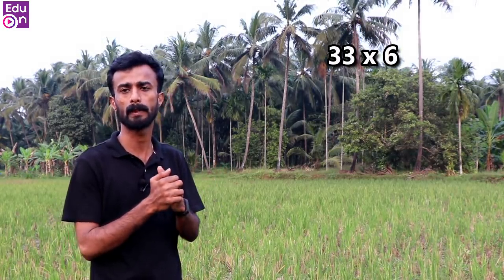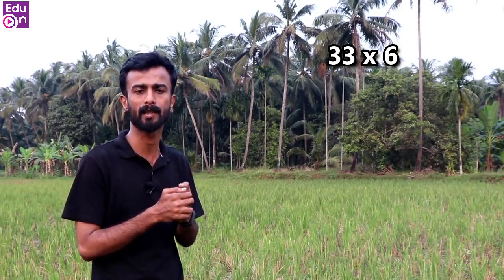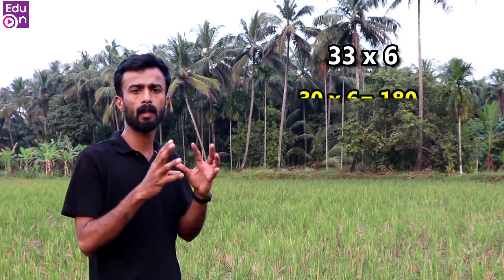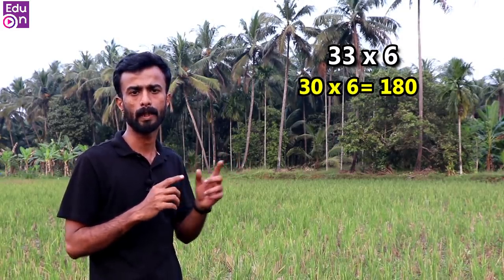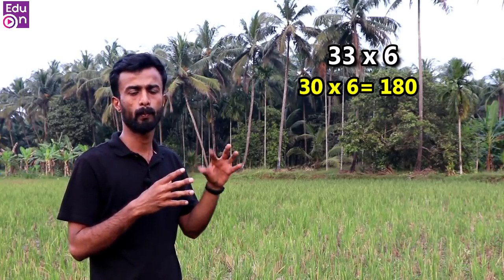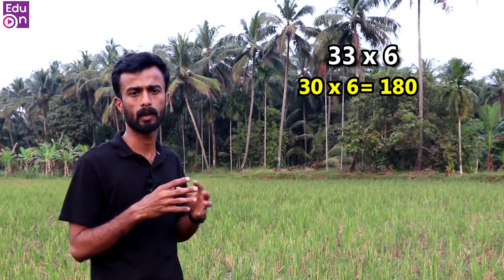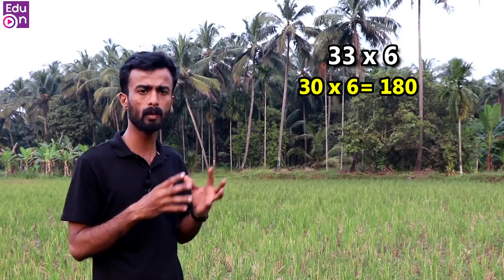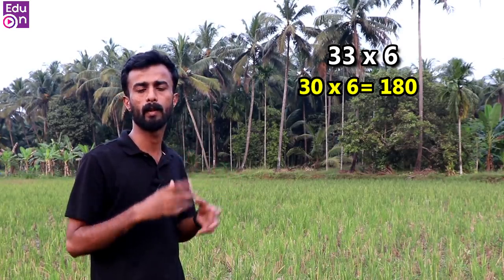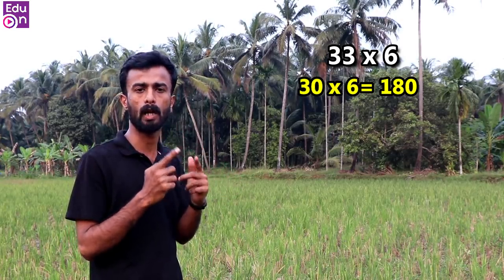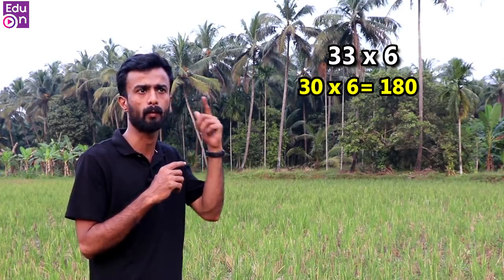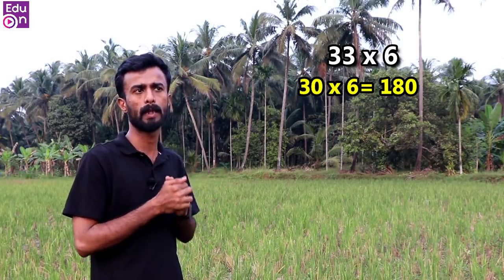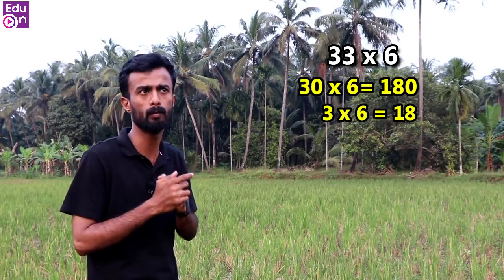The number is 33×6. You can see this number on the screen. We decompose 33 into 30, so 30×6. Then we multiply 3×6 in the same way. We will multiply 6 by each part.